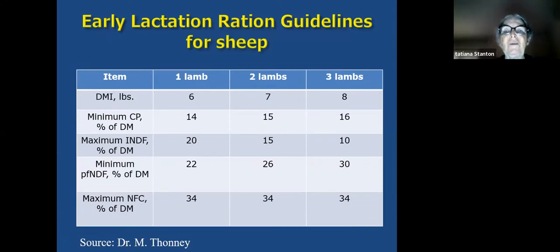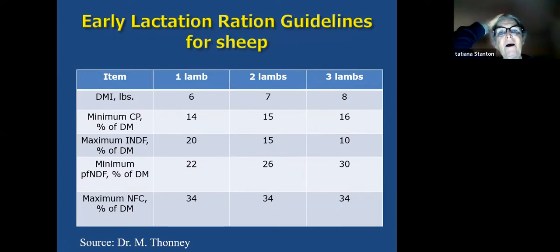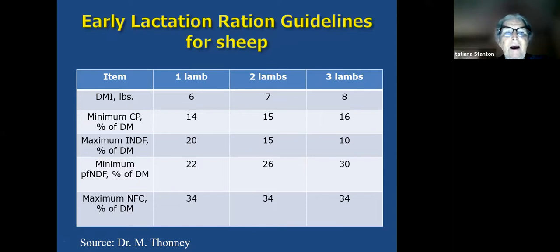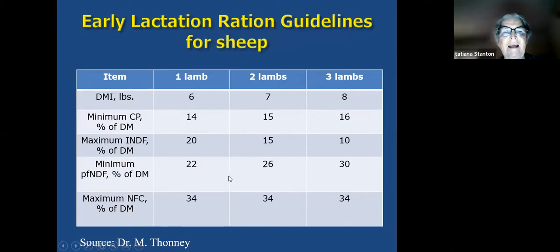Early lactation guidelines for sheep — which also hold well for goats, including meat goats nursing large litters and dairy goats — show that the minimum potential fermentable fiber should range from about 22% up to about 30%, depending on milk production level. Crude protein guidelines range from about 14% to 16%.